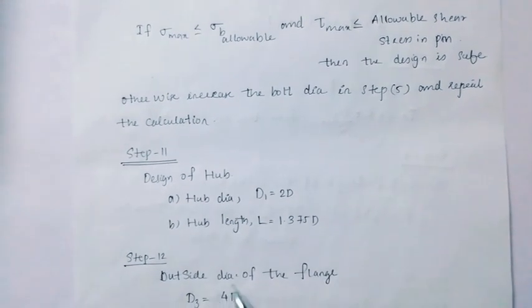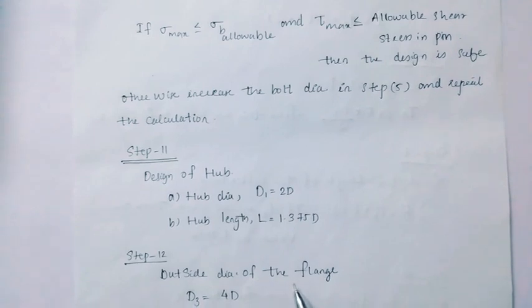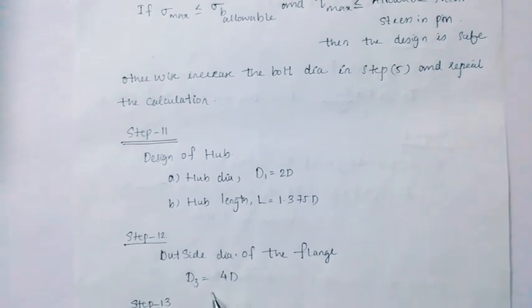Step 12: Outside diameter of the flange. D3 equal to 4 into d.